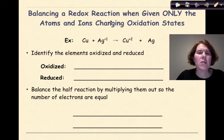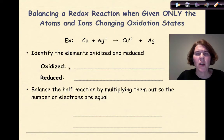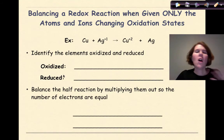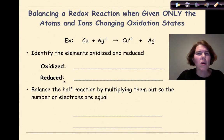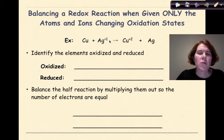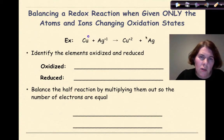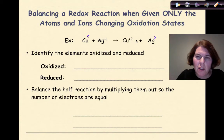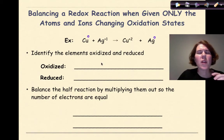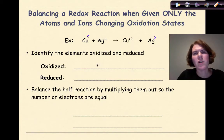Now we're going to look at how to balance a redox reaction when given only the atoms and ions changing oxidation states. So this is a little bit different — they're not going to give you a full-blown chemical equation. This requires a little bit more time and effort. So Cu plus Ag plus one yields Cu plus two plus Ag, and there's assumed charges of zero here because these are metals by themselves.